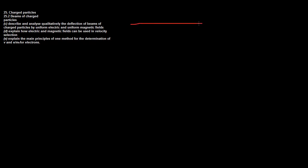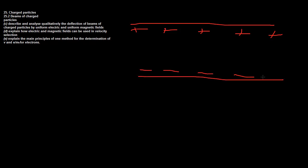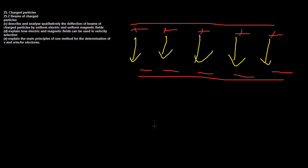I'm going to draw the fields side by side so you can see. We're talking about uniform fields here, so here's my electric field with field lines showing the direction positive charge moves. And then over here I'll draw my magnetic field going into the page.